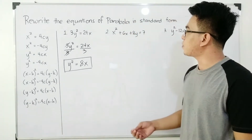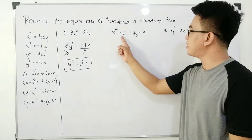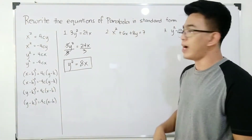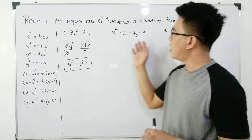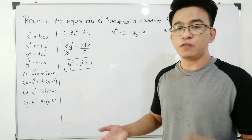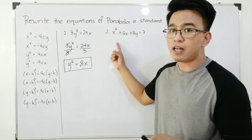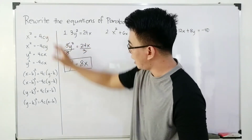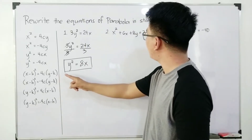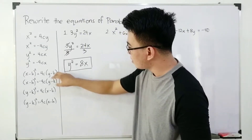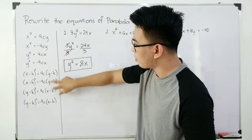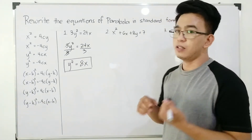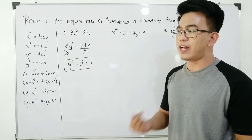Let's move on with item number 2. We have x² + 6x + 8y = 7. The x variable contains the exponent of 2, so we target the form x² = 4cy. First, you need to rearrange the terms. We need to arrange the x variables together.